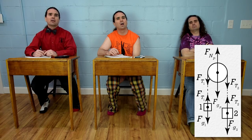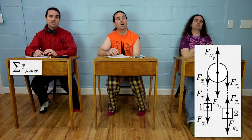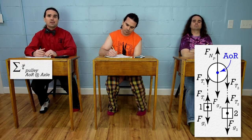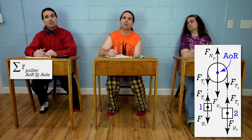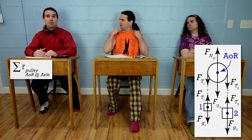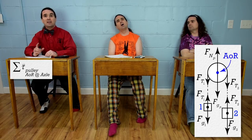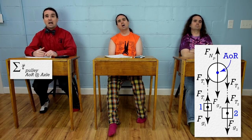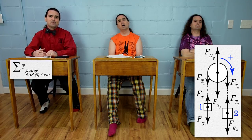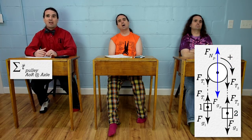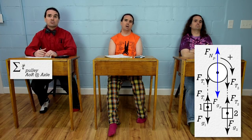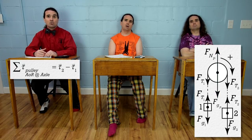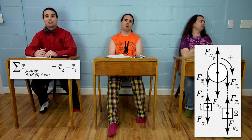In the past we've done pulley problems where we assumed the pulley had negligible friction and negligible mass. In that simplified case the two forces of tension would be the same, but that is not the case here. Billy, please keep going. Let's start by summing the torques on the pulley with its axle as the axis of rotation. Because mass 2 is greater than mass 1, mass 2 should apply a larger torque and cause the pulley to rotate clockwise, so let's define clockwise as positive.